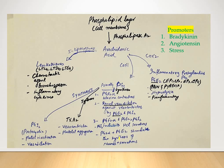Some of the prostaglandins are converted into prostacyclins and thromboxane A2, where thromboxane A2 is a vasoconstrictor. On the other side, PGI2, or prostacyclin, is a platelet inactivator — it helps in platelet inactivation through a vasodilatory phenomenon. At the same time, thromboxane A2 promotes platelet aggregation.